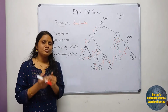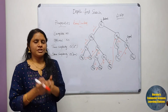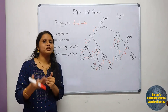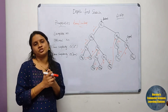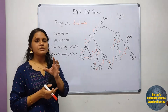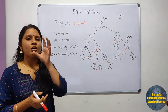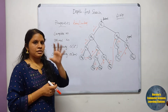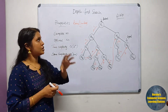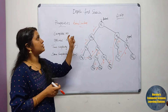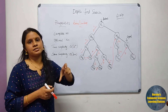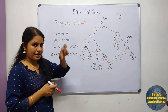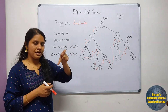Depth First Search does not require as much memory space compared to Breadth First Search. The space complexity of DFS is linear, meaning the search algorithm is time-limited rather than space-limited. Considering the branching factor B, it can be infinitely deep.